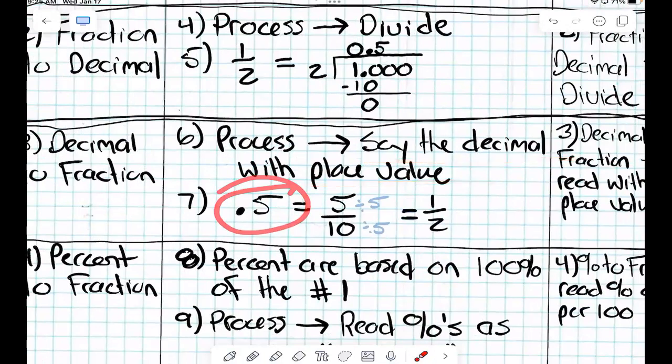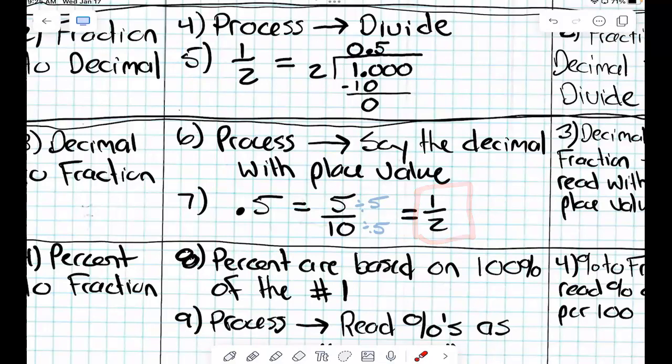So say this decimal. Five tenths. But is our final answer one half? Why? What did we have to do? Reduce. We good? OK, so you got your first two, yes?